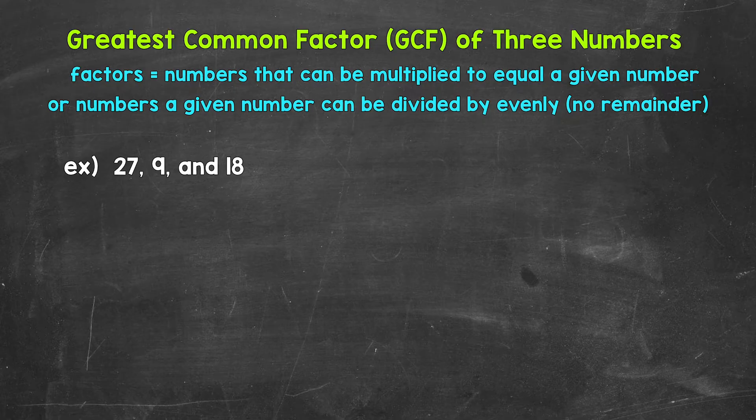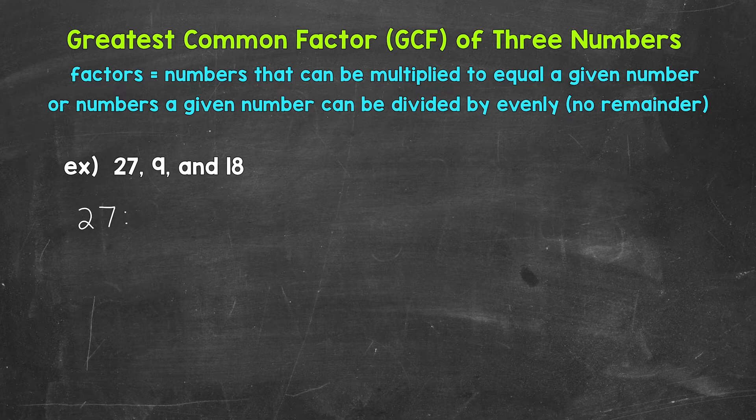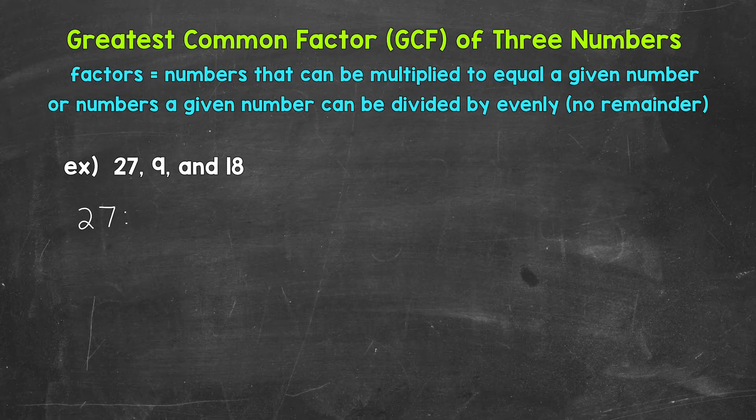Let's start with the factors of 27. Now, I would suggest always starting with the factors of 1 and the number itself, because we know 1 times that number will equal that number itself. We can think of factors in terms of pairs. 1 times 27 equals 27. Or we can divide 27 by those factors evenly, however you want to think about it.